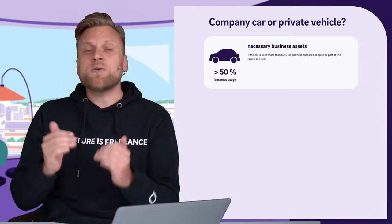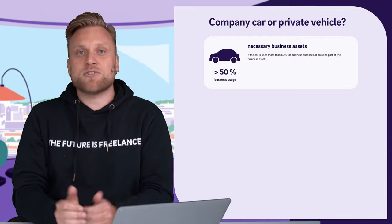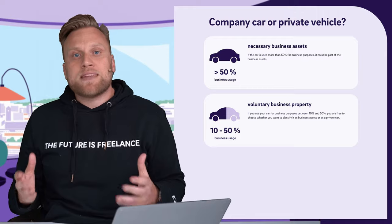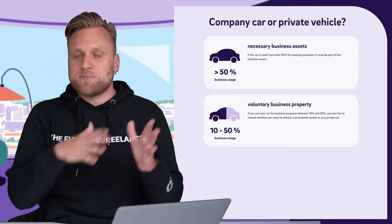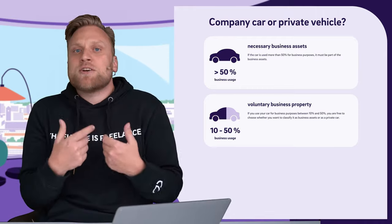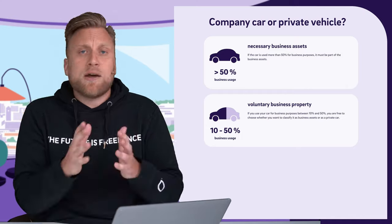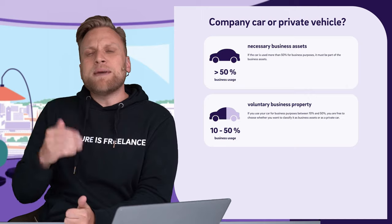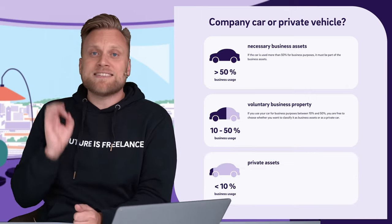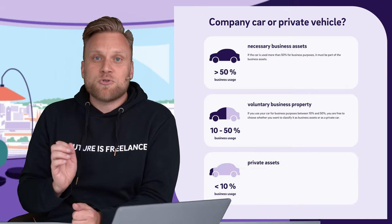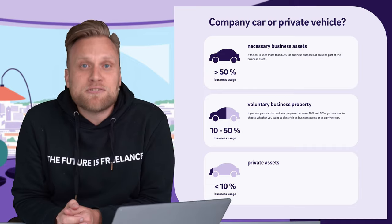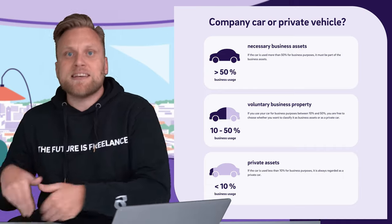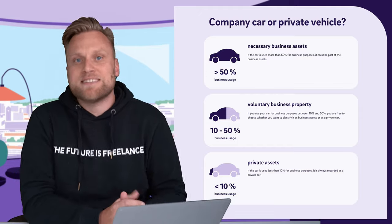The second scenario is when the percentage of business use is between 10% and 50% — then you can choose. You can decide to assign the car to business assets as discretionary business assets, or alternatively assign the car to private assets. If the percentage of business use is under 10%, you use the car mainly for private purposes and you do not have the option to choose — you have to buy the car privately and cannot acquire it as a company car.